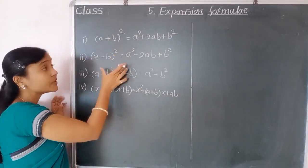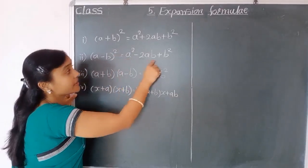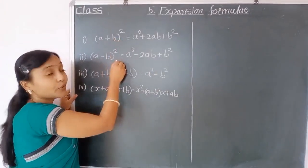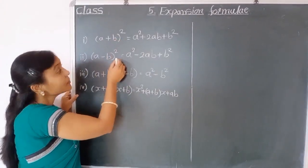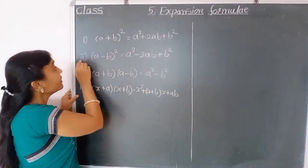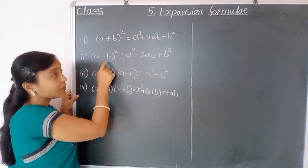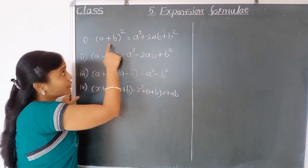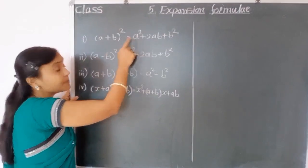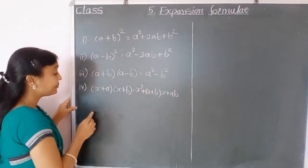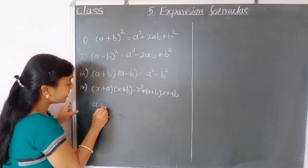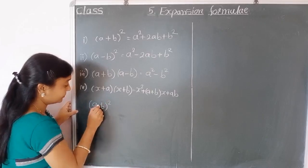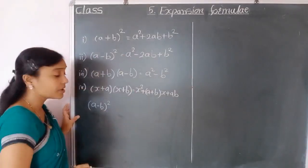So first we see how we get this expansion. These two formulas are same in method, so I take the expansion of the second formula because this one has minus. You solve the first formula at home. So, a minus b bracket squared — how do we get this expansion?